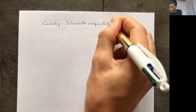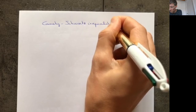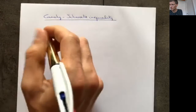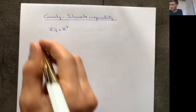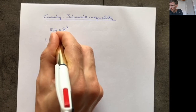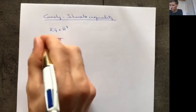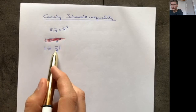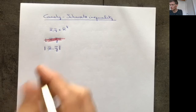Cauchy and Schwarz are two mathematicians who discovered this inequality. The Cauchy-Schwarz inequality says: if you take the dot product of x and y (the inner product) and then take its absolute value, the number you get is less or equal to the norm of x times the norm of y. Since the norm of x and the norm of y are both real numbers, you're comparing two numbers, which makes sense.